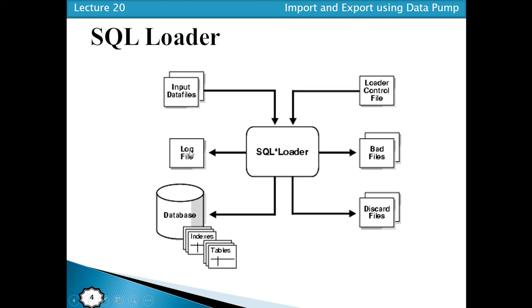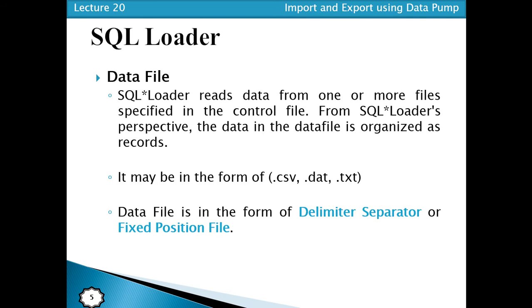Next, we have log files, which contain all the information about what files and data are present. Then there are bad files, which contain records that are not accepted — data that, due to some error, we are not able to load into the database table is moved to the bad file. Discarded files hold data that, due to some business logic, we are not able to move into the database.